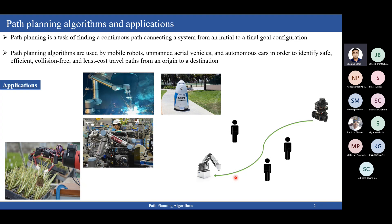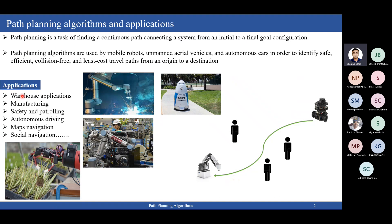Coming to applications, path planning is used in warehouse applications, manufacturing, safety and patrolling, autonomous driving, maps, navigation, and social navigation. We will look into some of these path planning applications with respect to path planning.